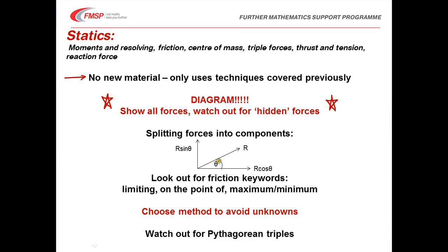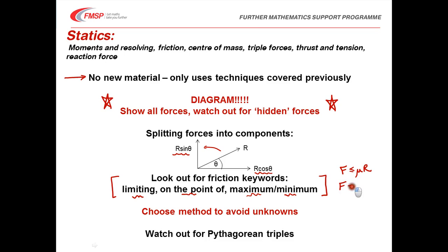A reminder about splitting forces into components: when you bend a force through an angle, the component you get is R cos θ; when you bend away from the angle, the component is R sin θ. Do look out for keywords in statics questions: 'limiting', 'on the point of', 'maximum', 'minimum' — these distinguish between F ≤ μR (general equilibrium) and F = μR, which applies when friction is limiting or it's on the point of slipping.